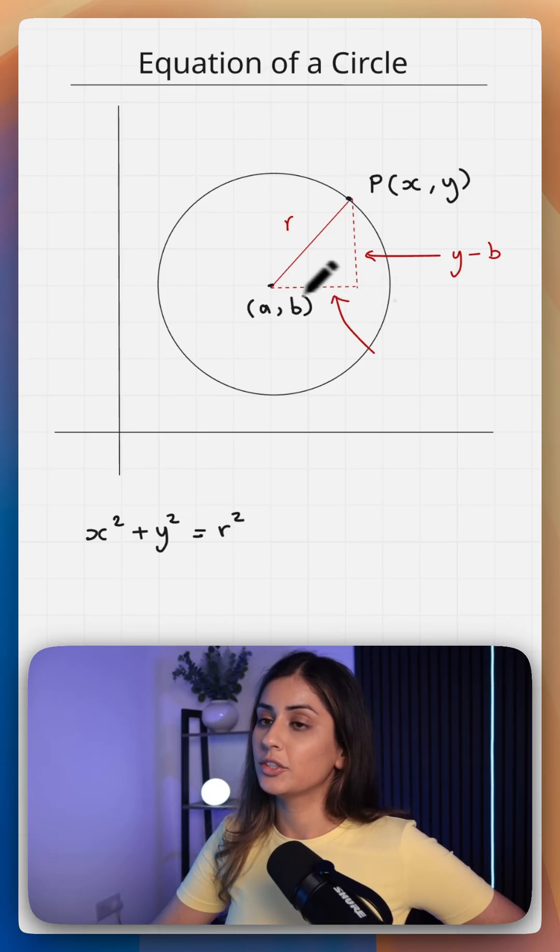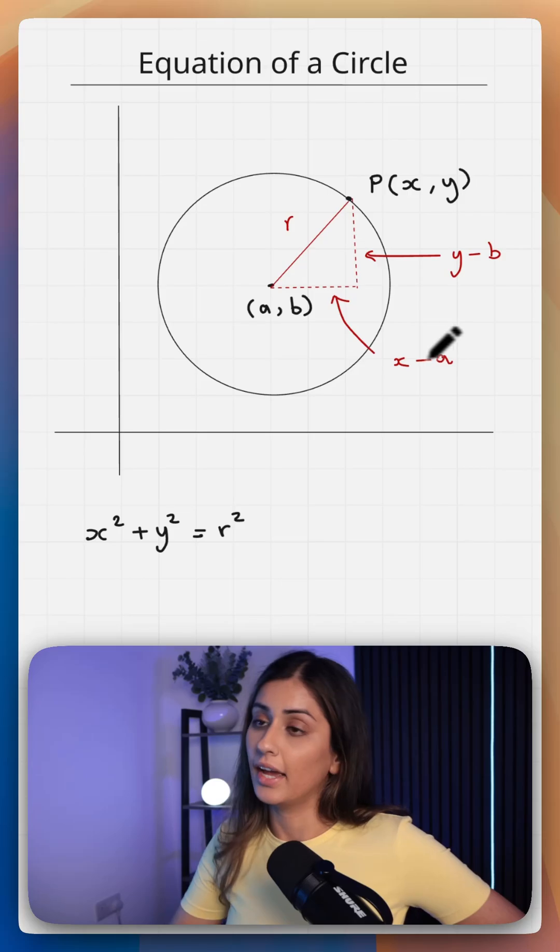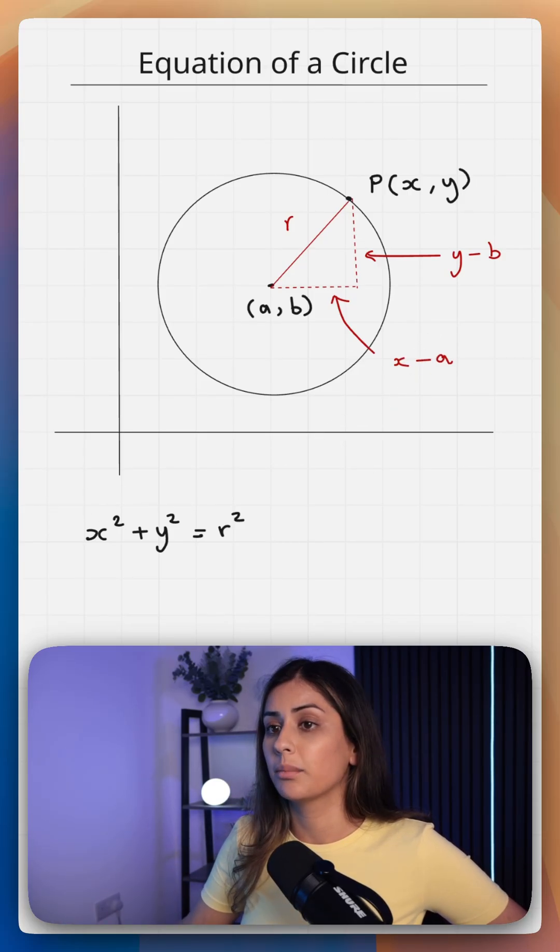Similarly, this distance here is your change in x. So it's this x coordinate minus your center x coordinate which is a. You can see here that we could form a right angle triangle and apply Pythagoras.